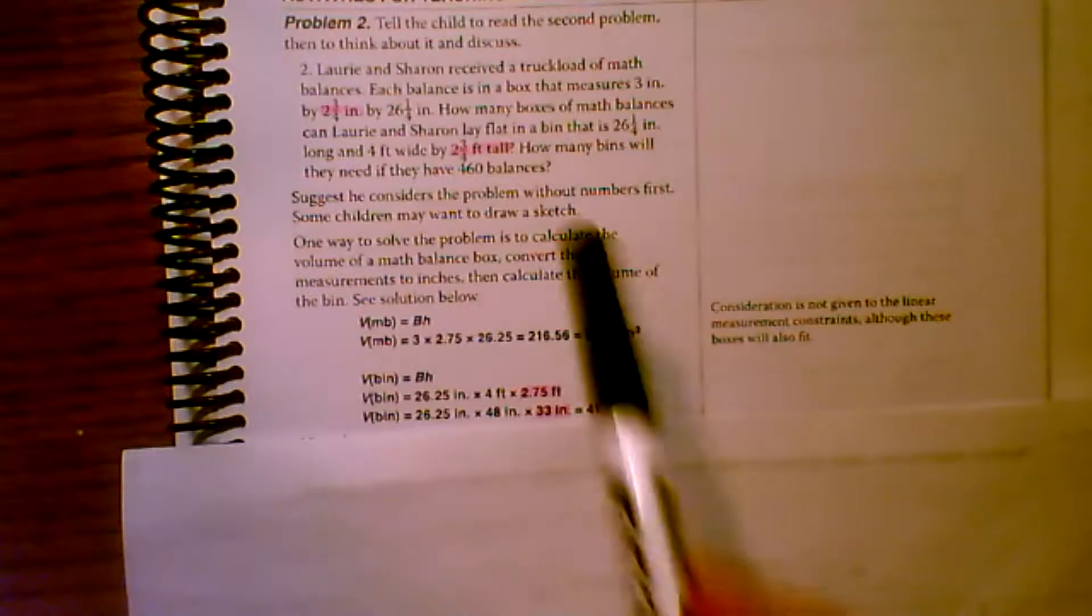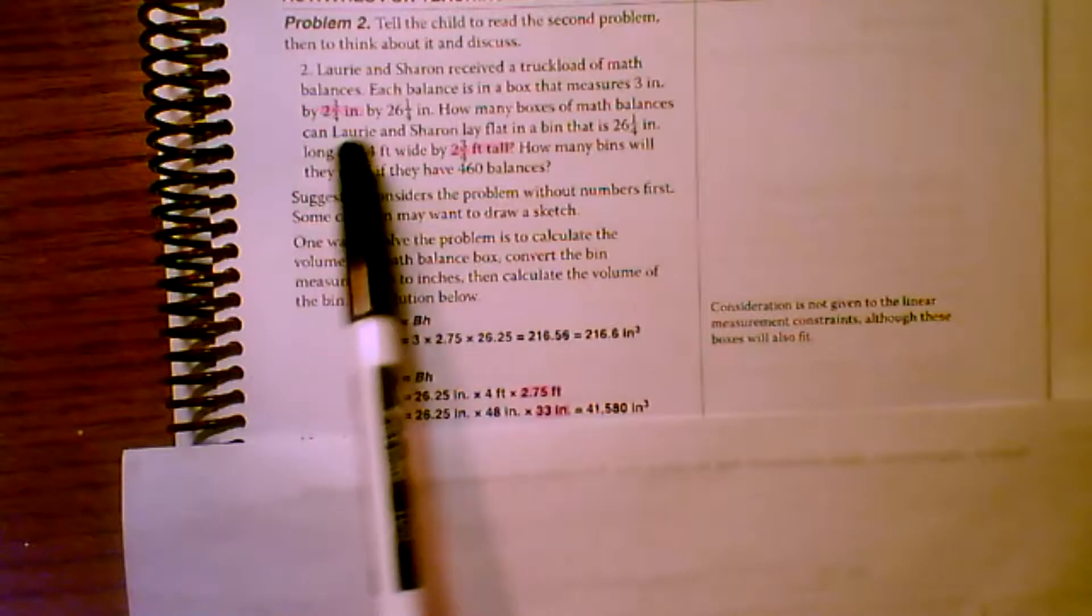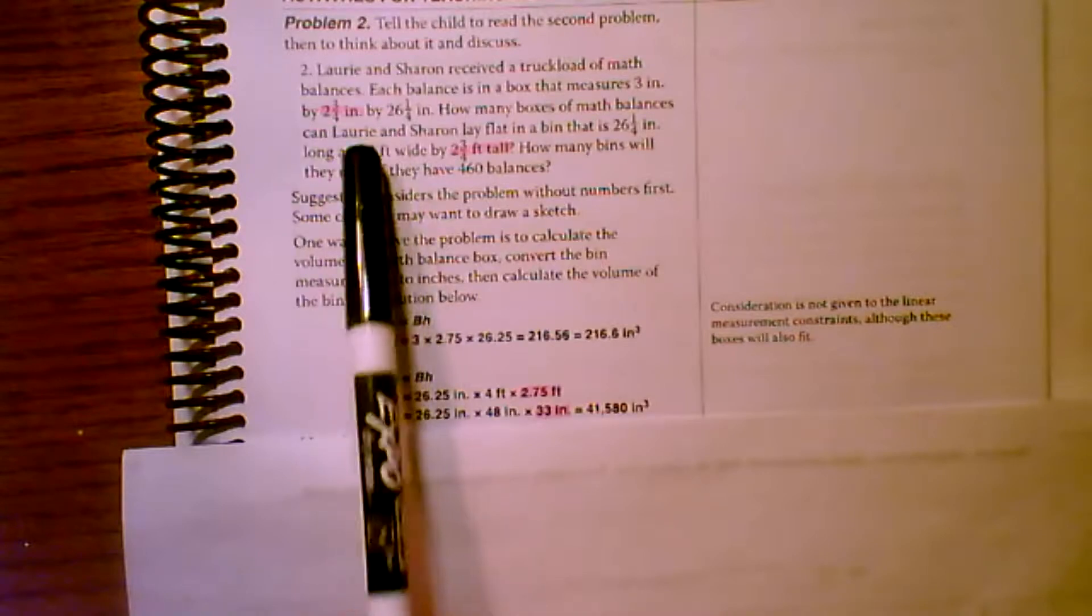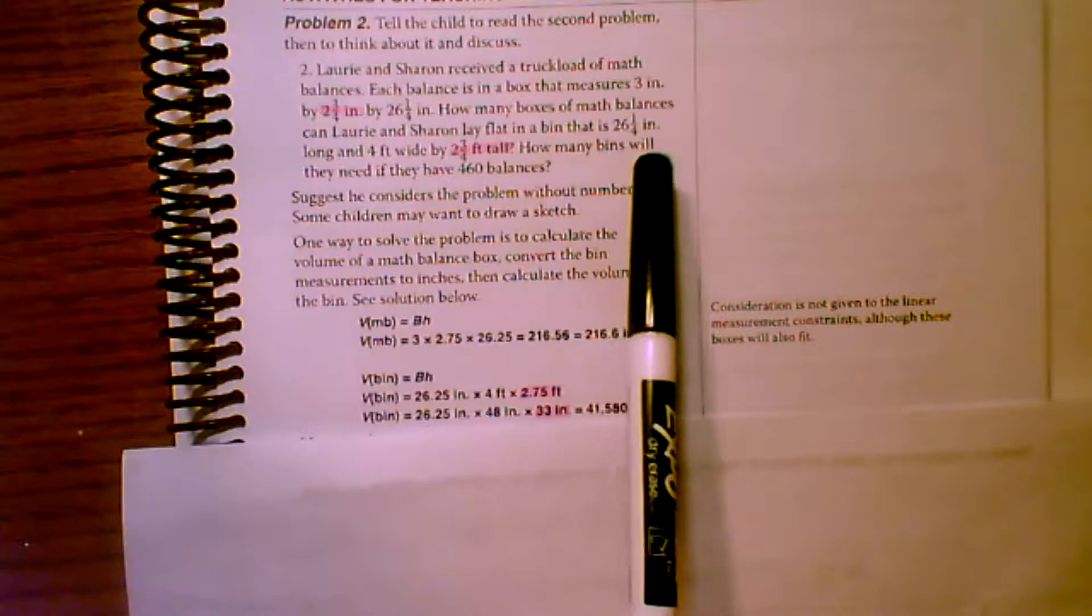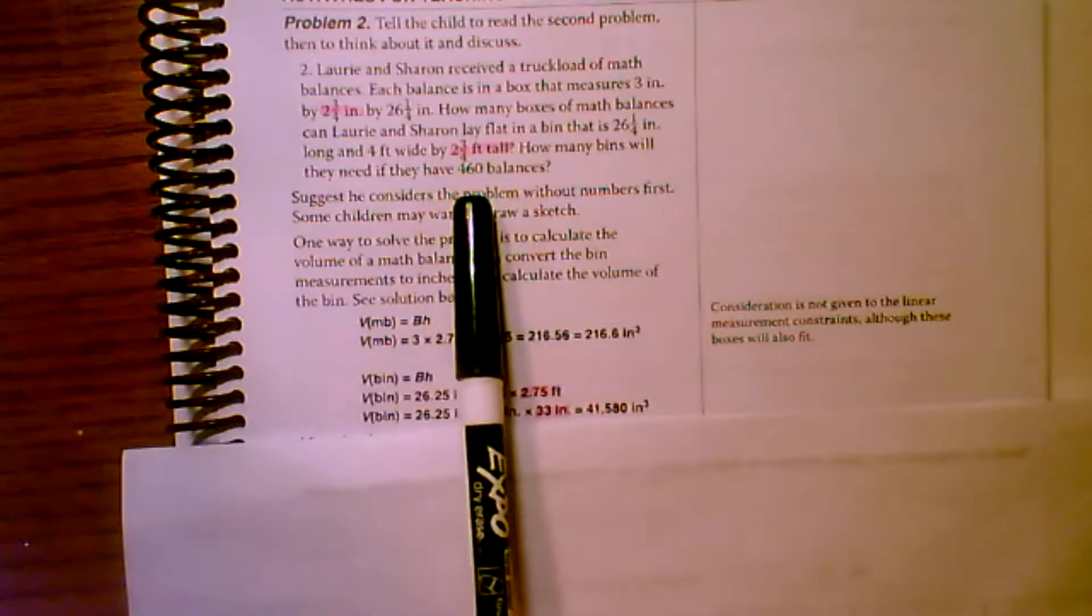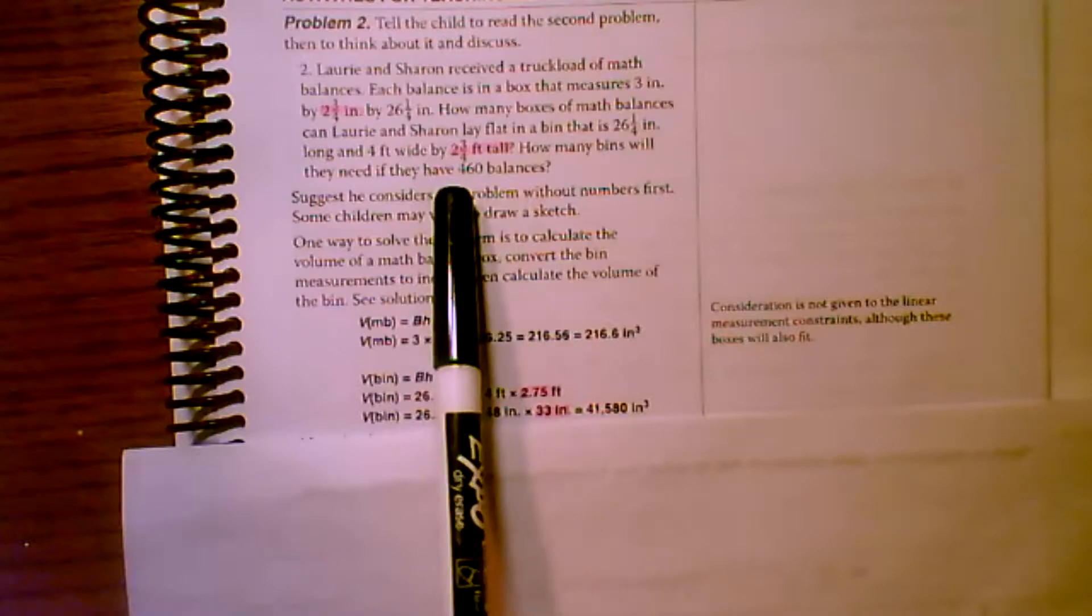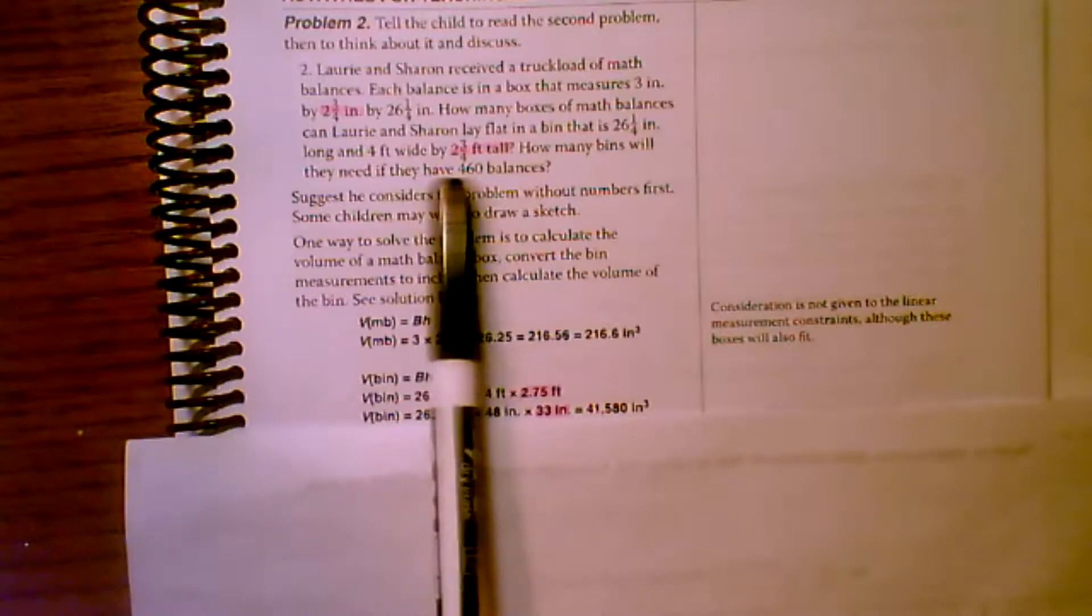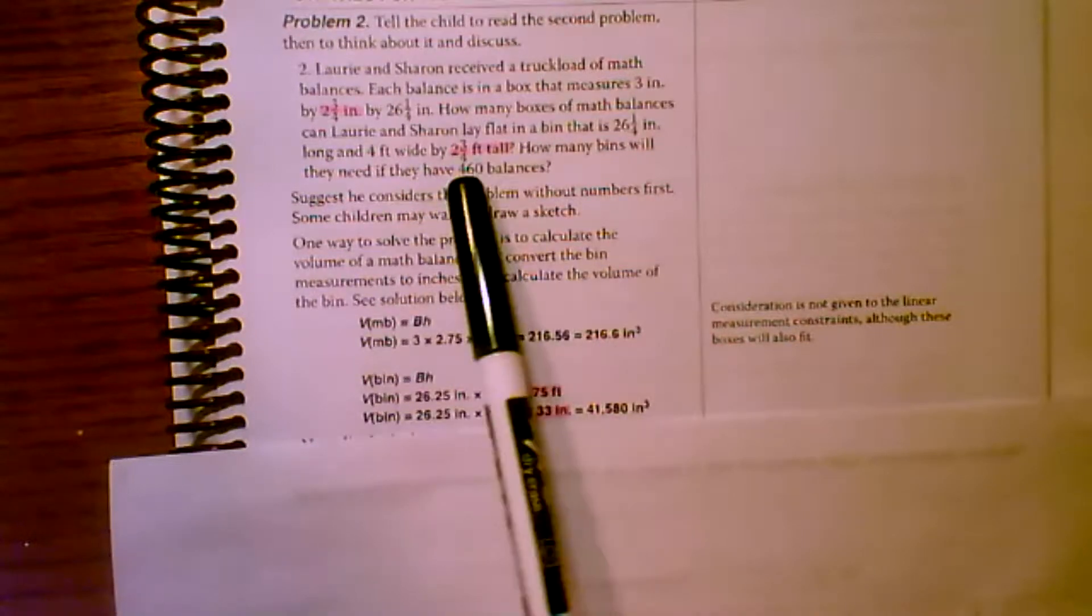So next, I wanted to show you something in problem number two. So we're on the second page. Here's problem number two. Notice it says each balance is in a box that measured three inches by two and three quarter inches by 26 and a fourth. And then how many boxes of math balances can Laurie and Sharon lay flat in a bin that is 26 and a fourth inches long, four feet wide by two and three fourths feet tall. The reason why I'm pointing this out is because my son was doing this problem and he read this as two feet and three quarters of an inch. I don't know why, it was just one of those days, but I wanted to point that out in case anybody else's child does that. And you're wondering what the heck, how did they get the answer wrong?